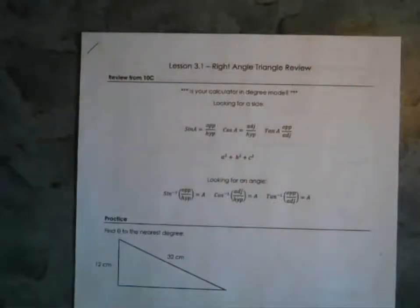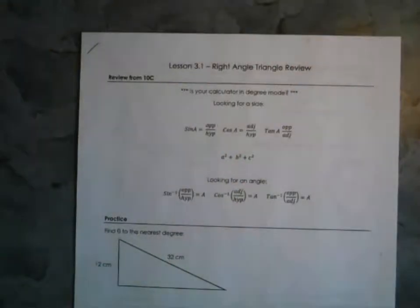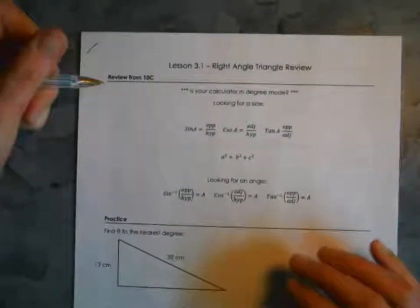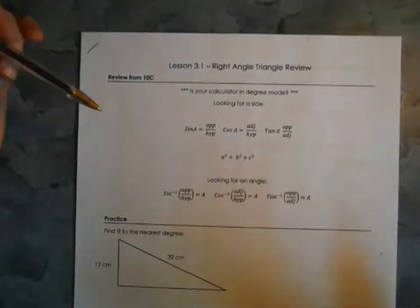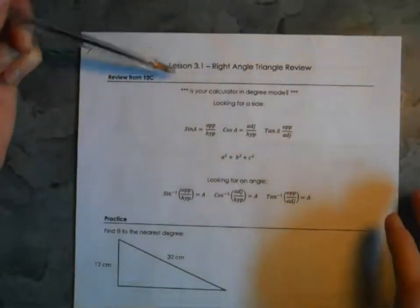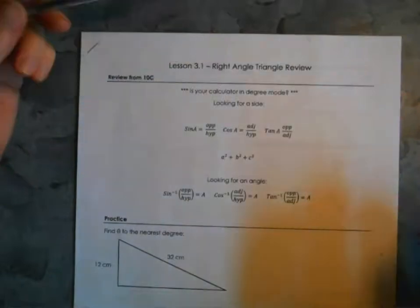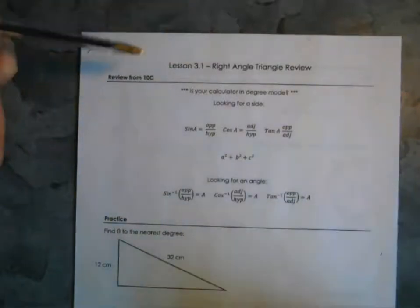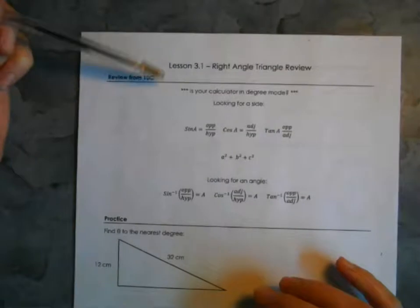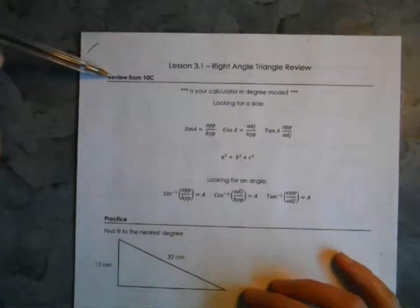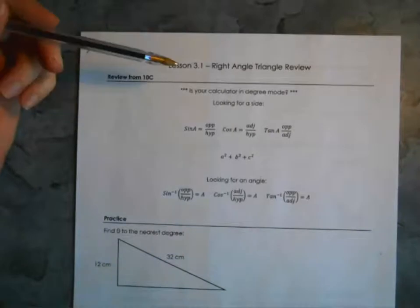Alright, hello guys. We are getting started on chapter 3 today. This is a continuation of unit 2, carrying on from chapter 2, looking at some trig stuff. We're going to get some additional information on trig in this chapter. So a quick review from Math 10C of some of the things you'll need to remember as we move forward.